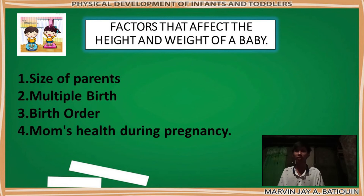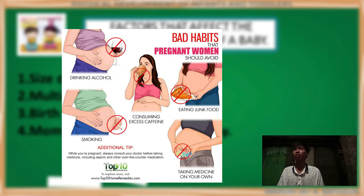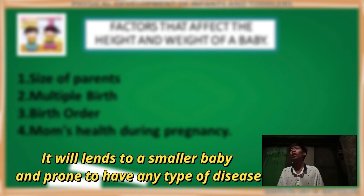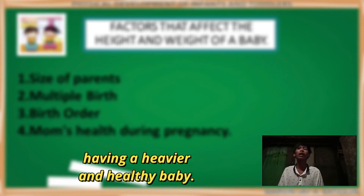The fourth factor is the mom's health during pregnancy. This is very crucial to the mother when she is pregnant. Whatever habits the mother has during pregnancy, it will affect the newborn baby. If the mother is doing good, automatically the result is good — same applies for doing wrong and bad. If a mother has bad habits like smoking cigarettes, drinking alcohol, and improper lifestyle, it will lead to a smaller baby prone to have any type of disease. Being a responsible mother during pregnancy will result in a heavier and healthy baby.